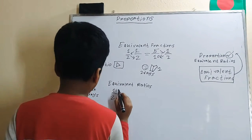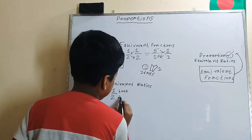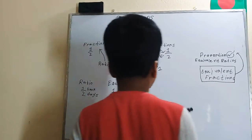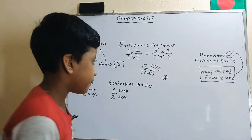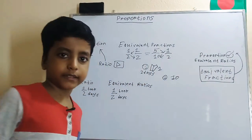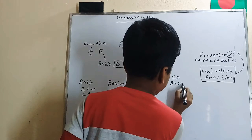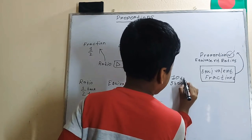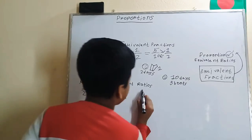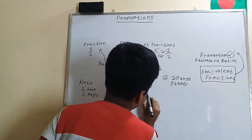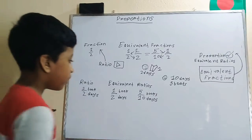Now let's have a pair of equivalent ratios. One book over two days. So let's start with our own ratio, one book over two days. Now let's say that our child wants to read for ten days. So how many books would they read?